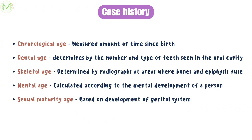Chronological age refers to the age measured by the amount of time since birth. Dental age is determined by the number and type of teeth seen in the oral cavity. Skeletal age is determined by radiographs in areas where bone and epiphysis fuse. Mental age is calculated according to the mental development of a person, and sexual maturity age is based on the development of the genital system and secondary sexual characteristics.